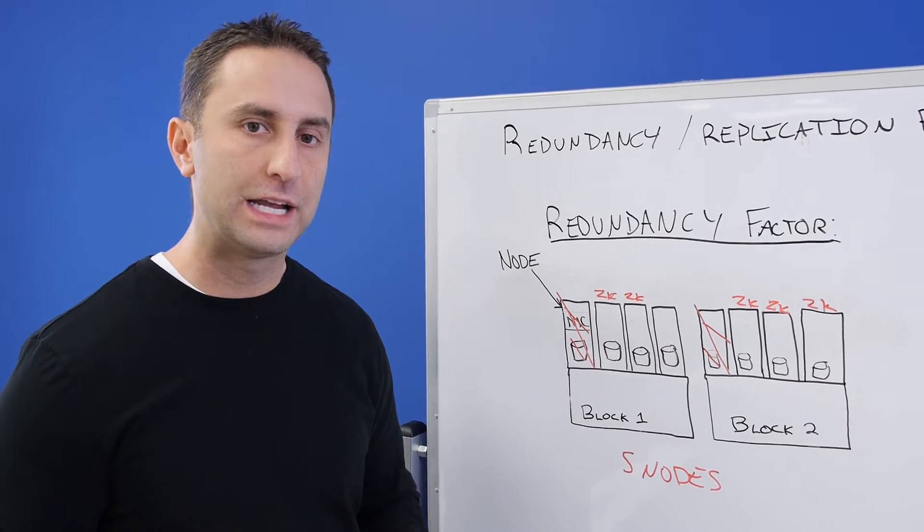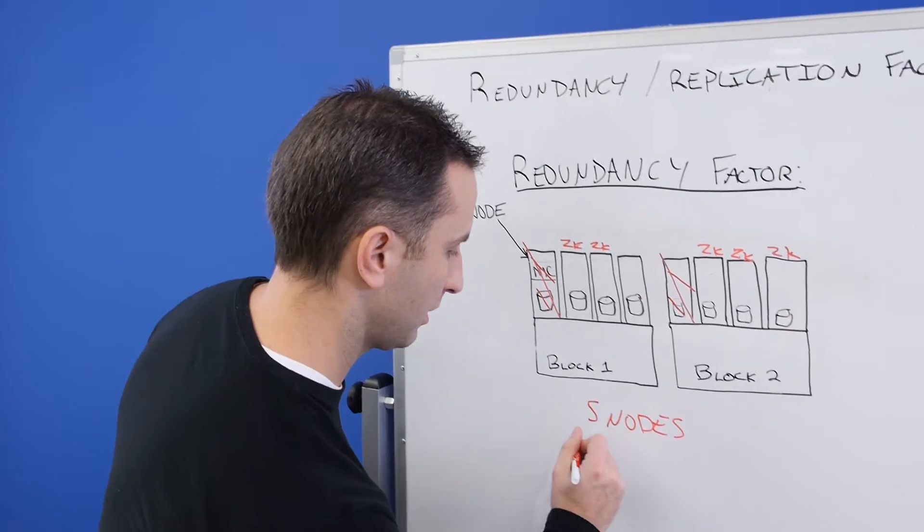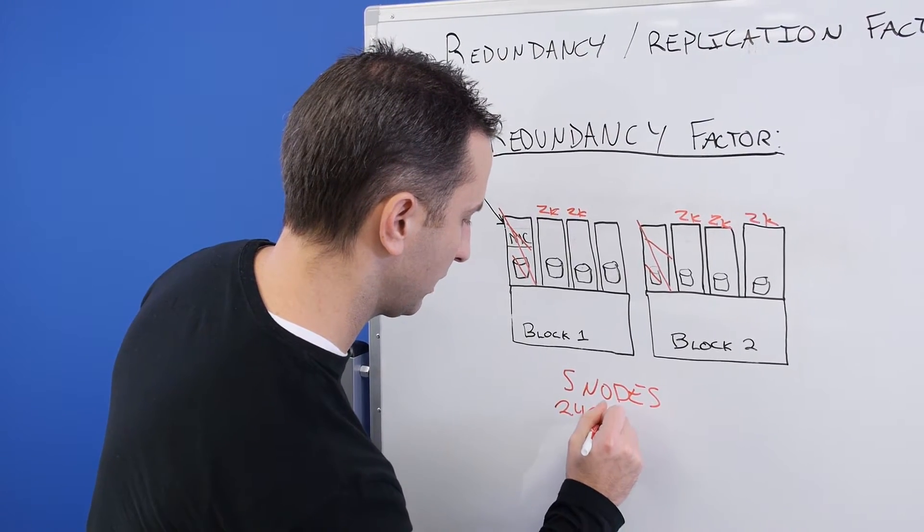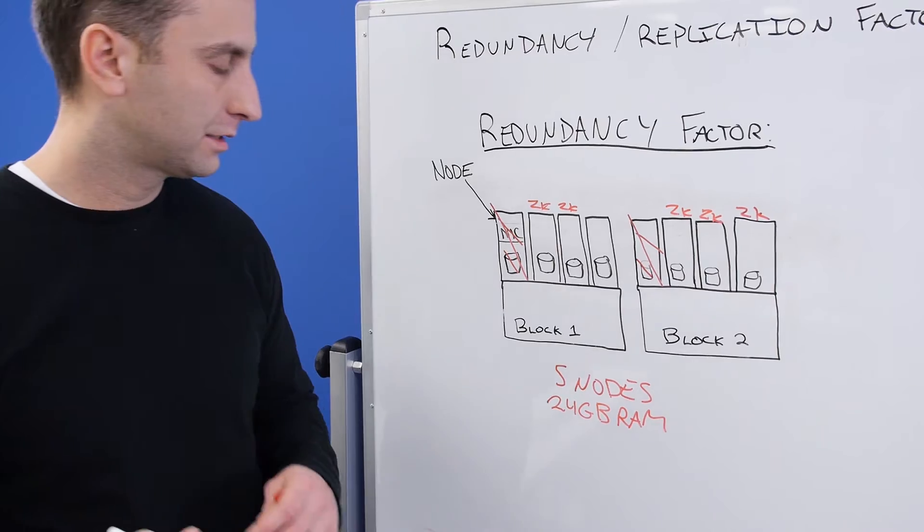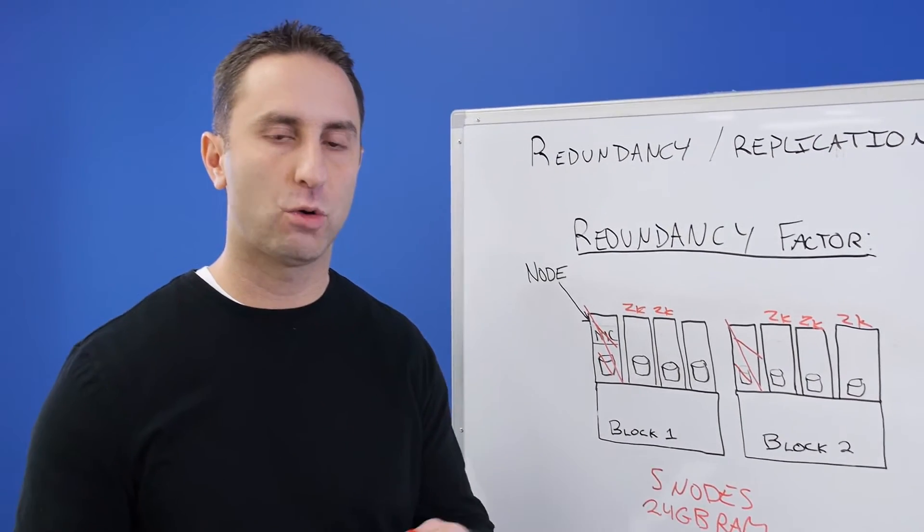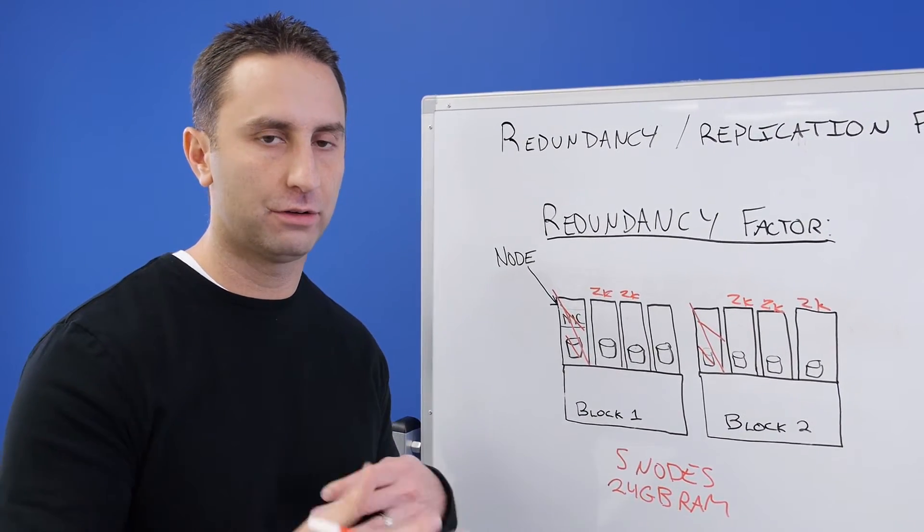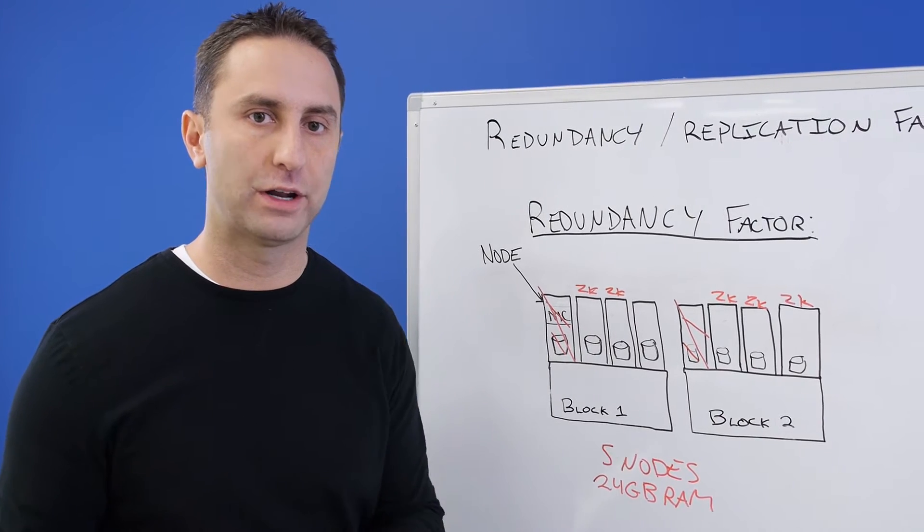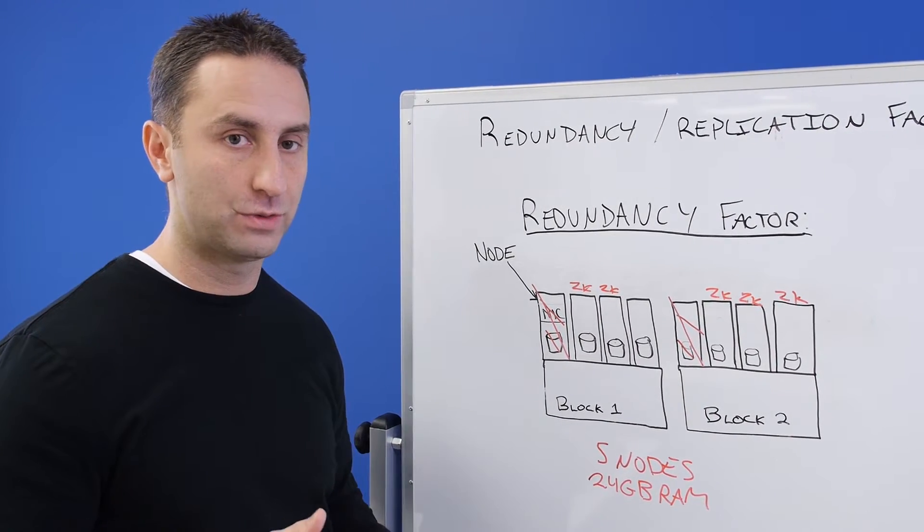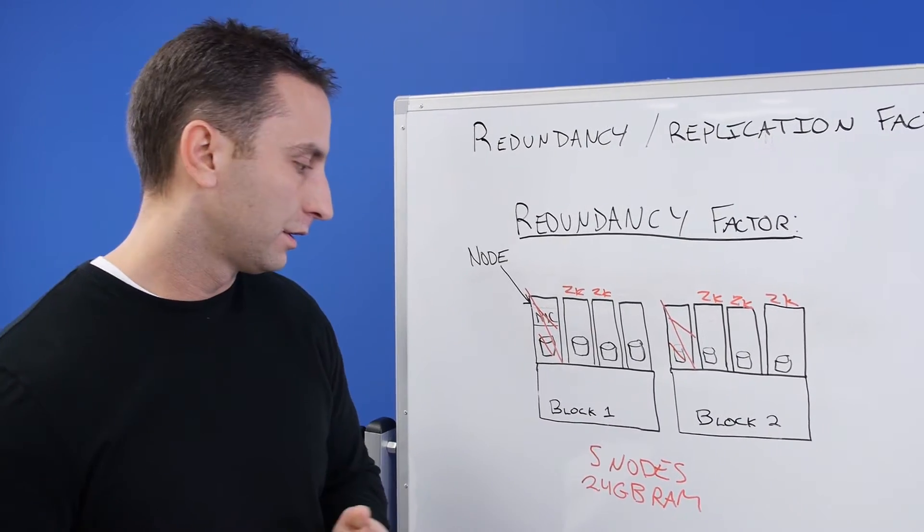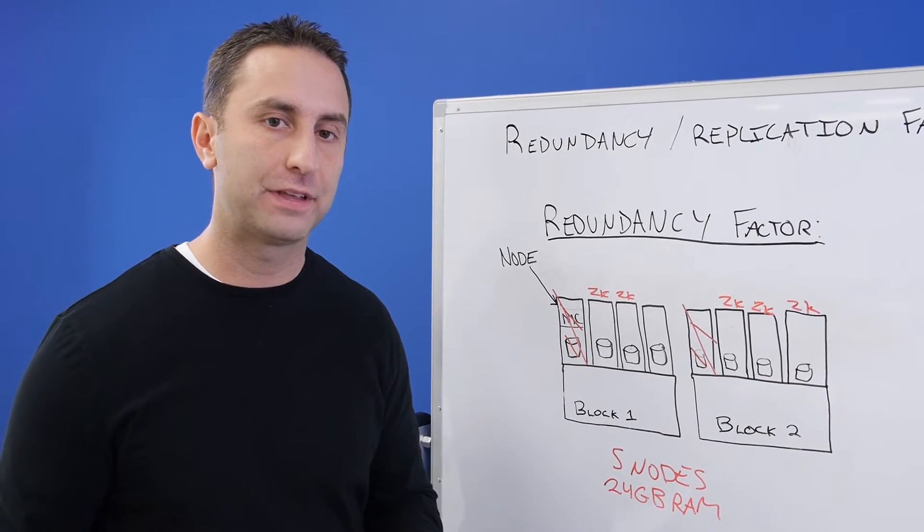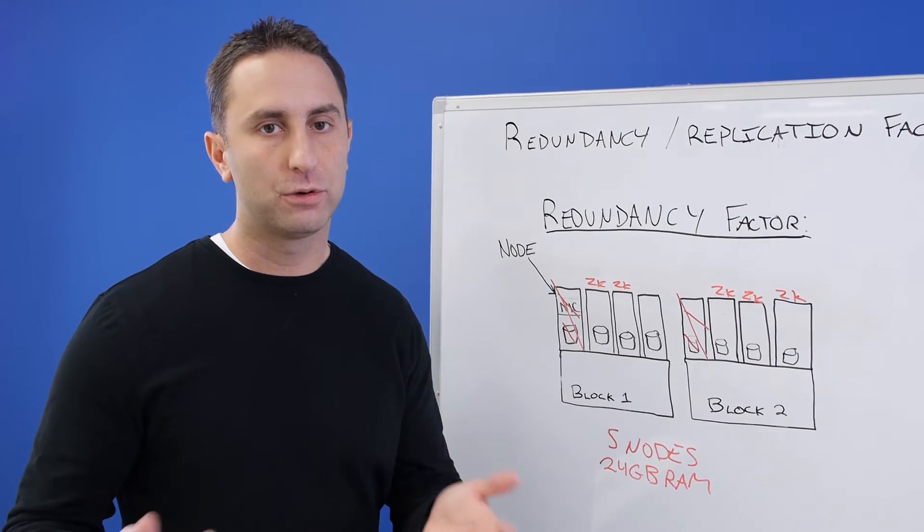In addition to having five nodes, each CVM needs to be configured with 24 gigabytes of RAM. That's just from a performance perspective. We require that additional overhead to handle the additional requirements for redundancy factor of three, because we do replicate our metadata five times in a redundancy factor three cluster.